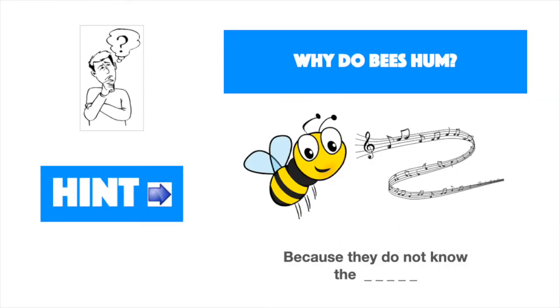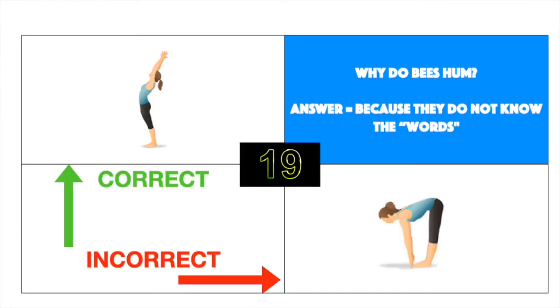Why do bees hum? Answer, because they do not know the words. Correct, hold a standing backbend. Incorrect, hold a toe touch.